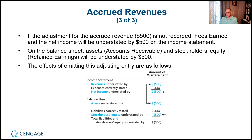If the adjusting entry for accrued revenue is not recorded, the impact would be: on the income statement, fees earned and net income would be understated by $500. On the balance sheet, assets and stockholders' equity would also be understated by $500. Since we didn't record the revenue, net income would be less than it should be, which is reflected in stockholders' equity also being understated.